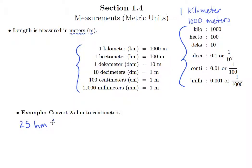Let's note the relative size of a hectometer versus a centimeter. A hectometer is up here, that's 100 meters, and a centimeter is 1/100 of a meter. So we're going from a larger unit down to a smaller unit.